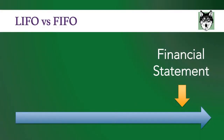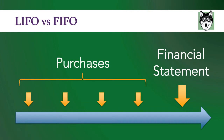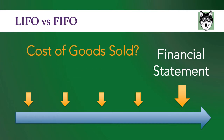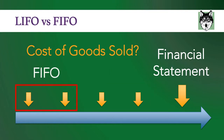LIFO and FIFO really deal with time. You create a set of financial statements at a moment in time, but you purchase inventory many different times. And so your goal is to figure out your cost of goods sold. LIFO means the most recent purchases are sold first. FIFO is the opposite, where you sell the oldest items first.